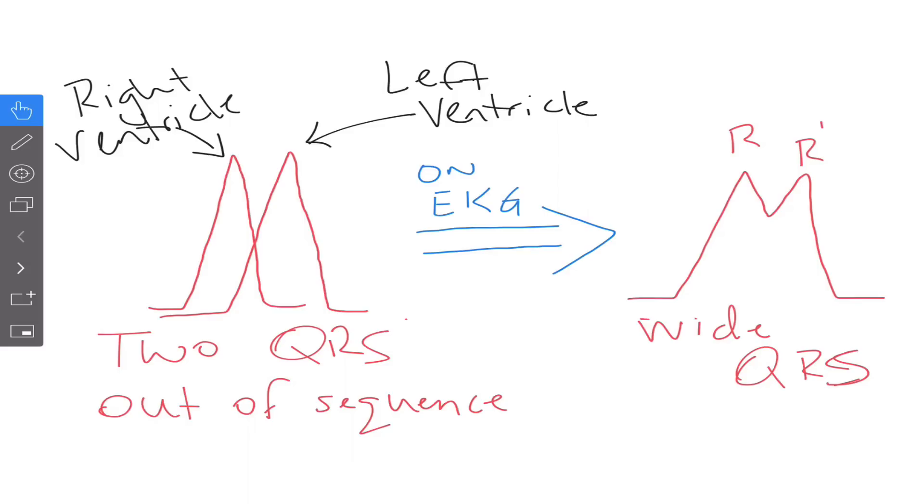So as you can recall from class, when an impulse is traveling normally it's sent from the SA node through the internodal pathways to the AV node, down the bundle of His, and then to the right and left branches, and then out to their respective fascicles and their Purkinje fibers.